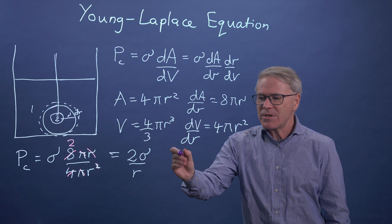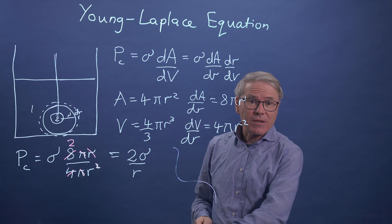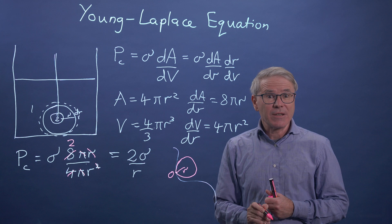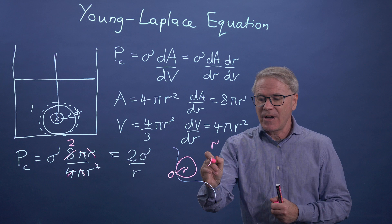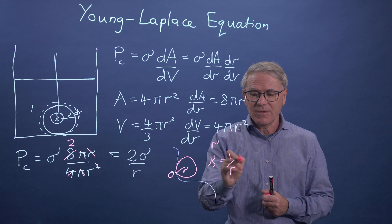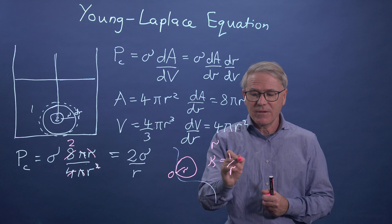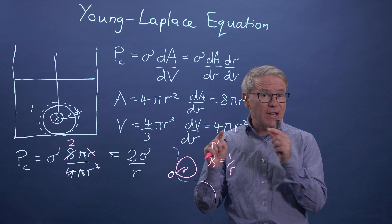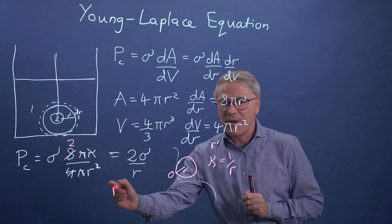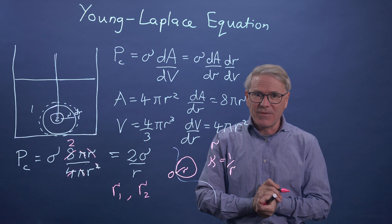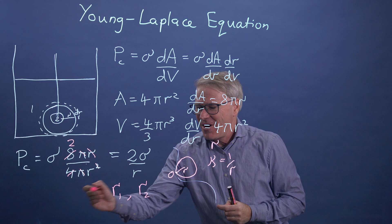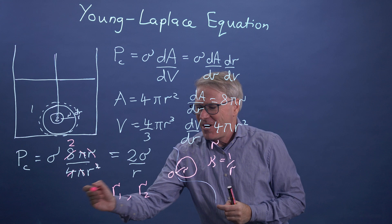For any smooth curve, at any point we can match a circle of radius r — the radius of curvature. We define curvature κ = 1/r. In three dimensions, a smooth surface has two principal radii of curvature in orthogonal directions, labeled r1 and r2. For a sphere, it is curved the same way in both directions, so r1 = r2 = r, the radius of the sphere.